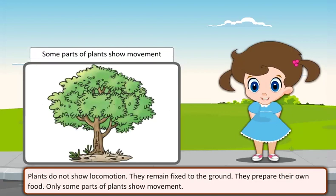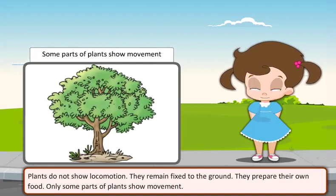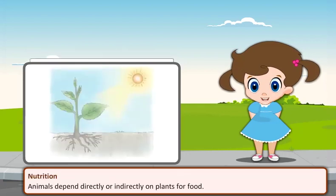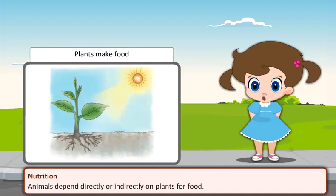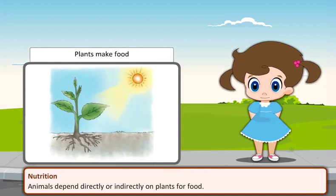Plants prepare their own food, and only some parts of plants show movement. Nutrition: Animals depend directly or indirectly on plants for food.